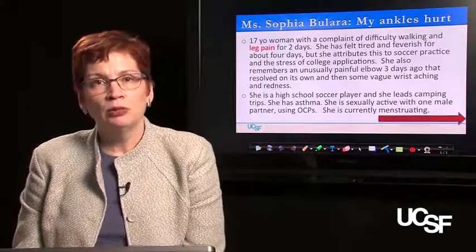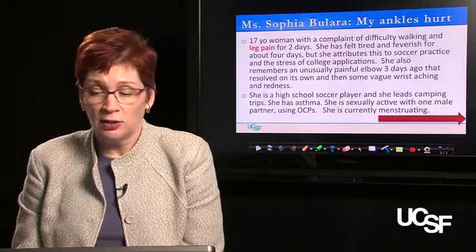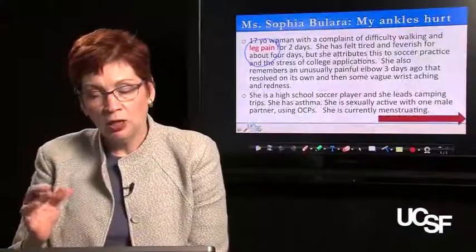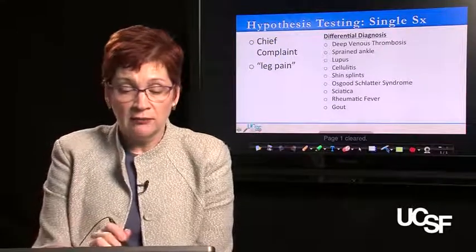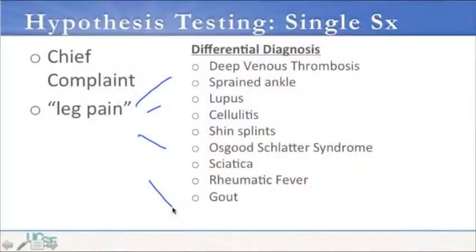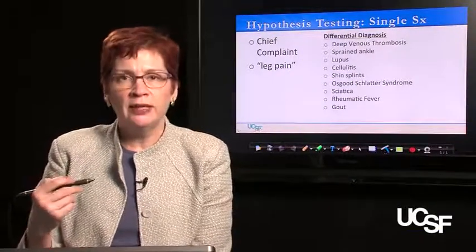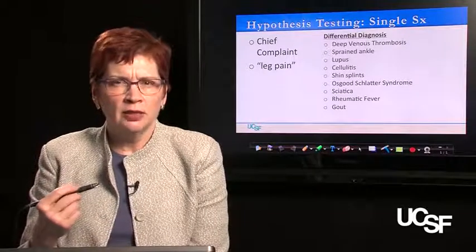Let's approach Sophia's problem using hypothesis testing. We focus on one symptom — leg pain — and generate a differential diagnosis list of things that could cause leg pain. That might include deep venous thrombosis, sprained ankle, lupus, cellulitis, shin splints, Osgood-Schlatter syndrome, sciatica, rheumatic fever, or gout. You can see that the person generating this list is probably considering some elements of Sophia's history, just not explicitly — for example, remembering she takes oral contraceptives and thinking DVT might be relevant, or that she's a young woman so lupus might be relevant.